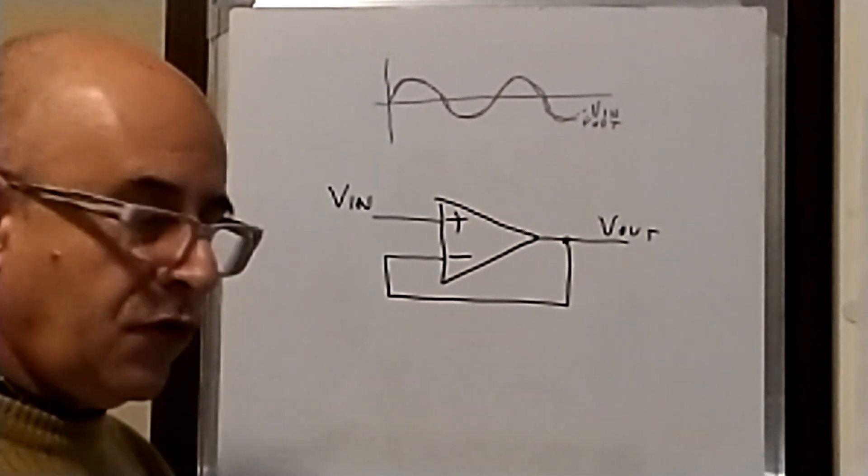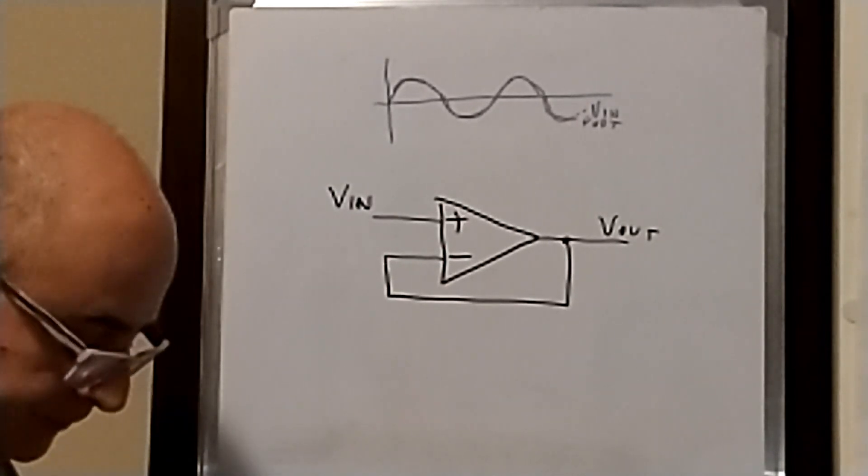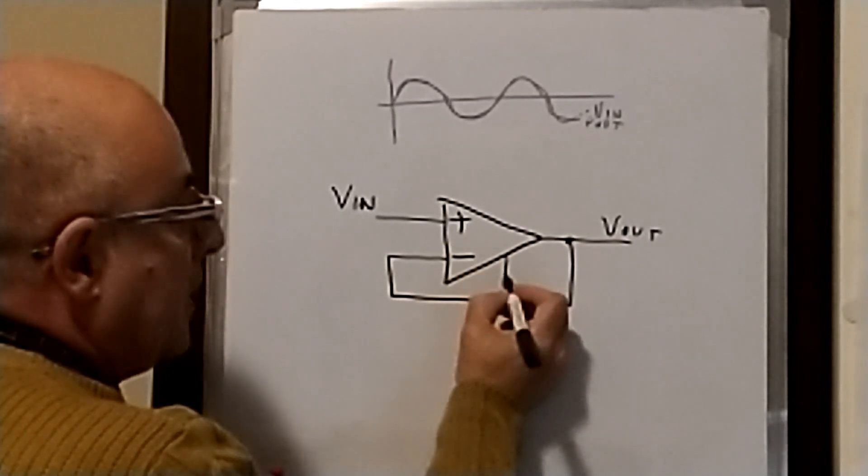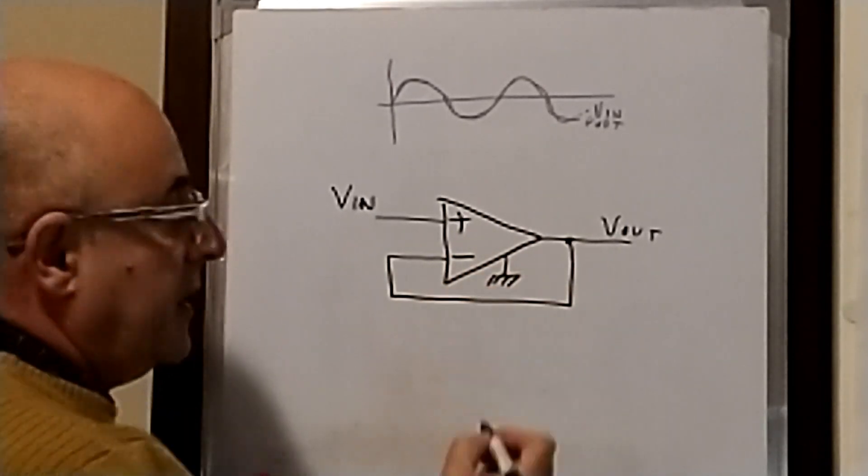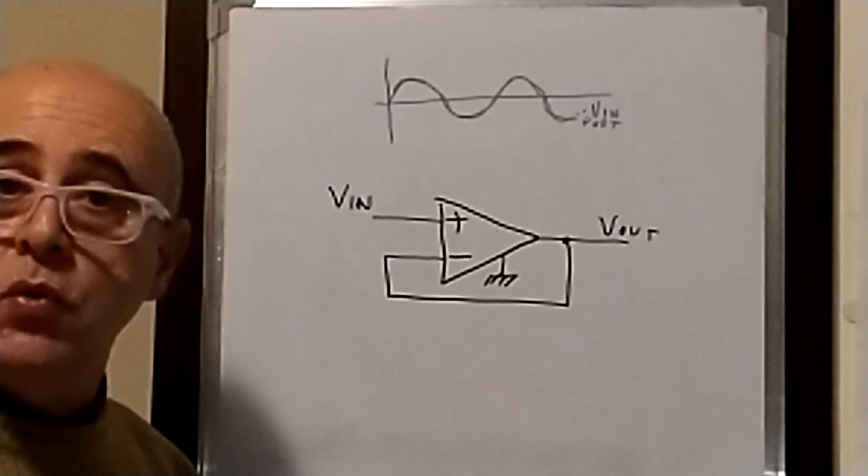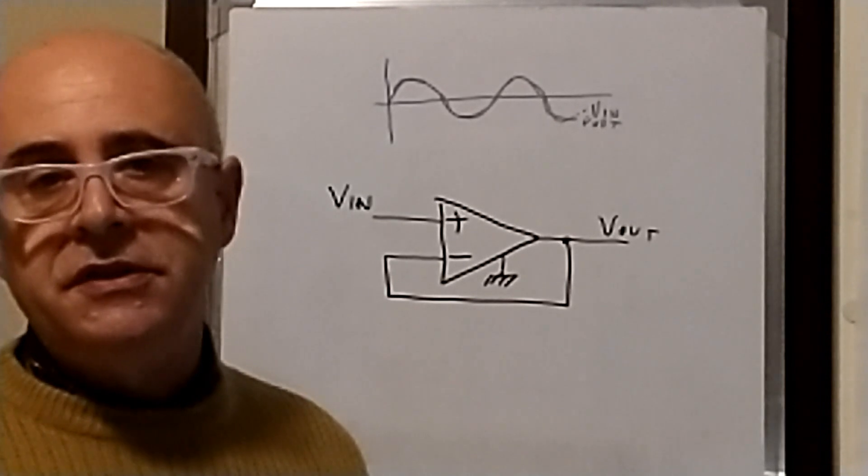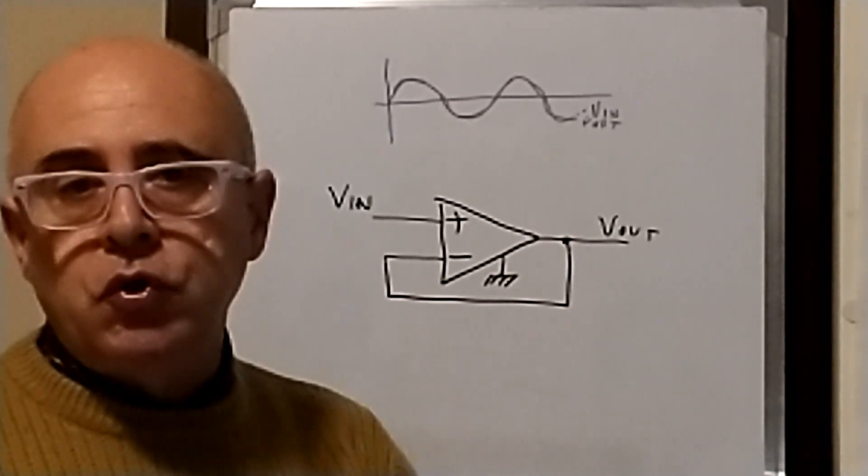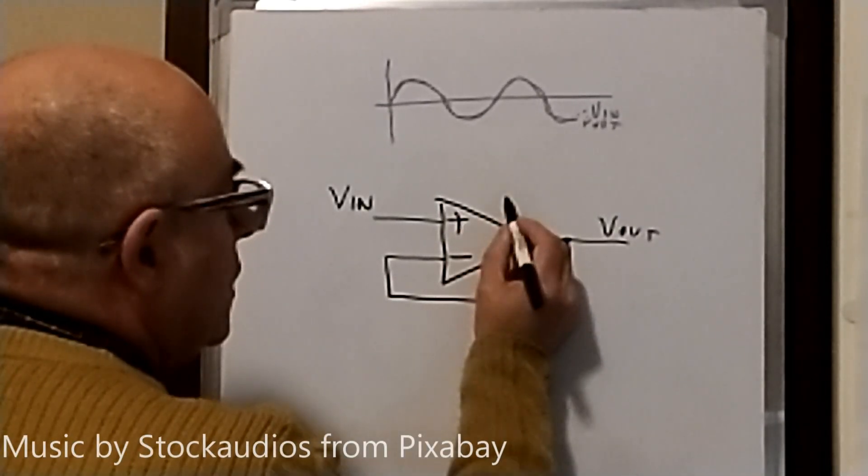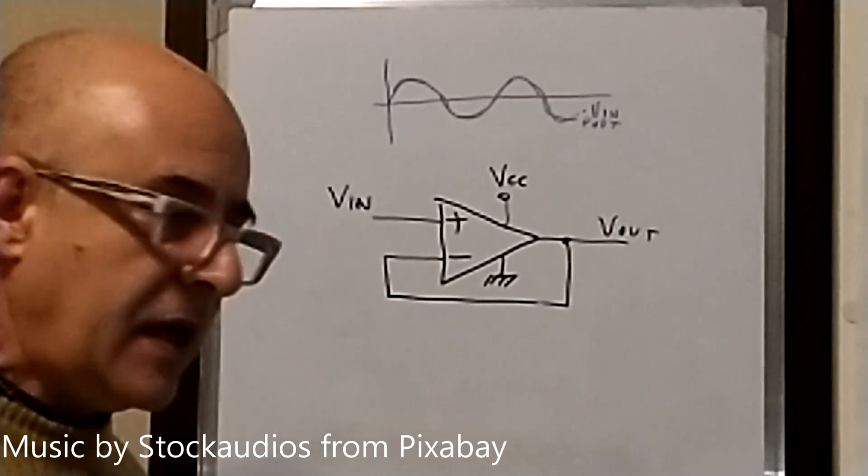But for our purposes, this is not sufficient. First of all, connect your operational amplifier negative power supply to ground. In such a way, you will realize a very simple circuit. You will not need two power supplies, a positive and a negative one. You will need only a positive power supply.